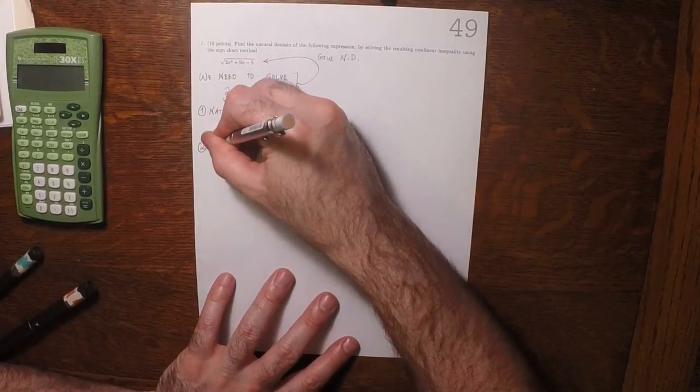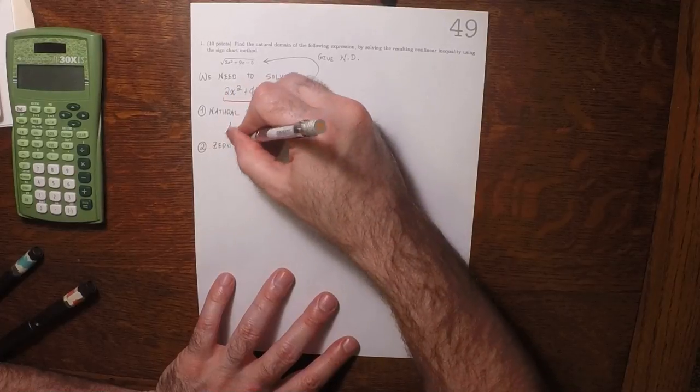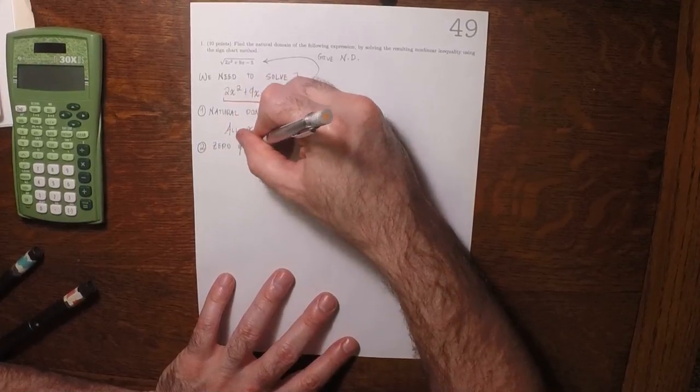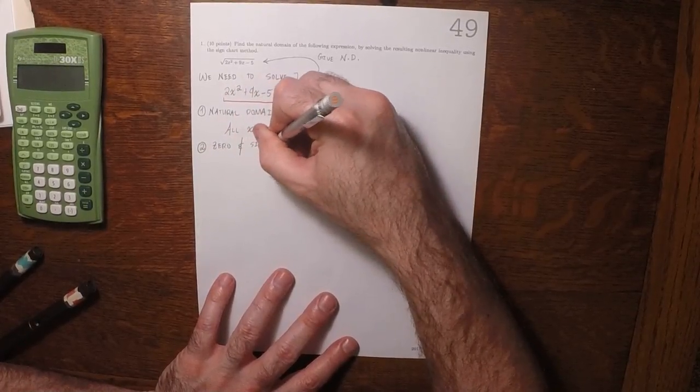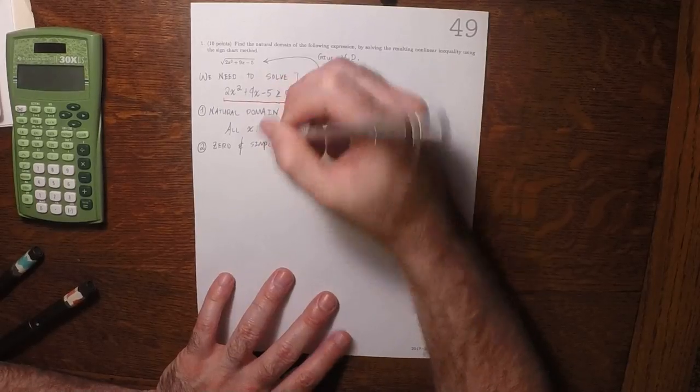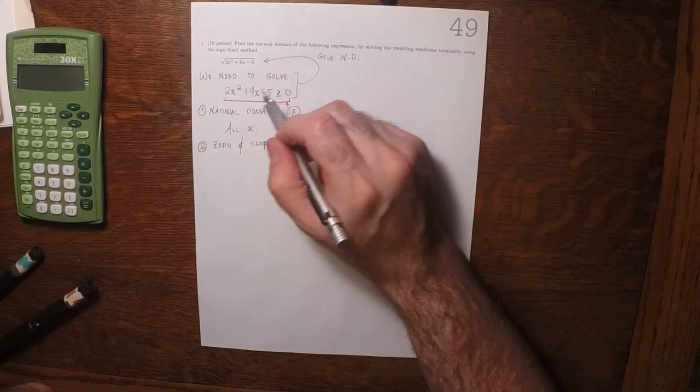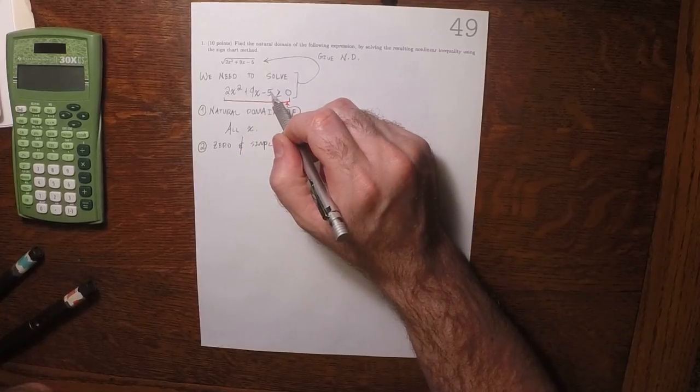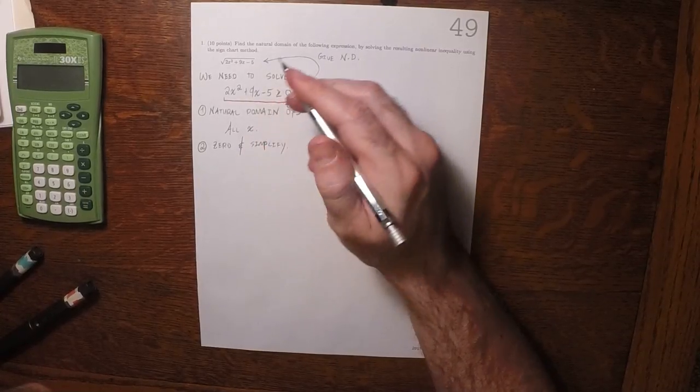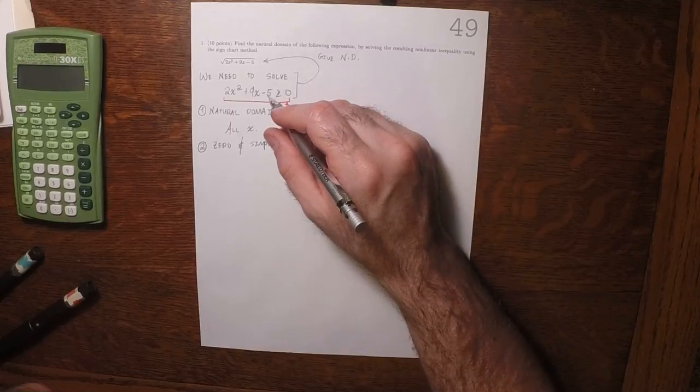Now we want to zero and simplify. Let's think about it for a moment. Can we think of two numbers whose product is negative 10, whose sum is positive 9, so that we can factor that?